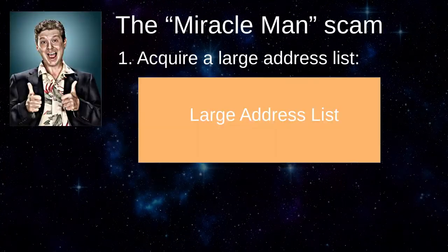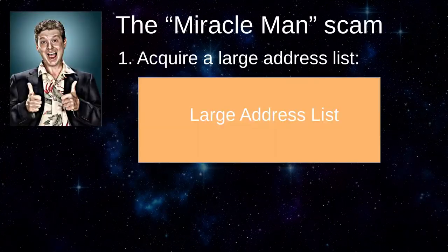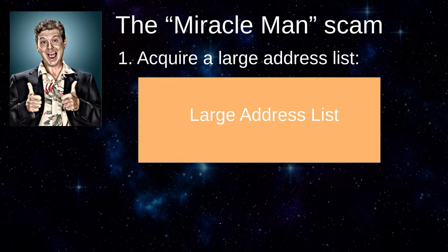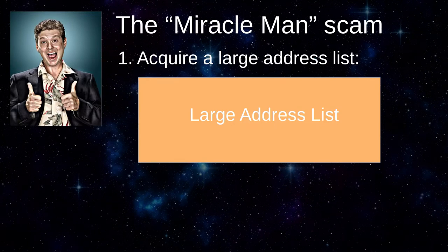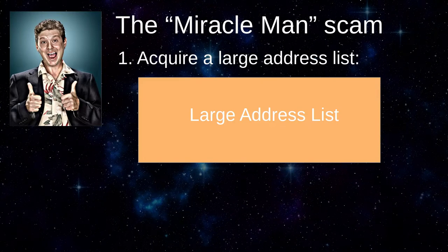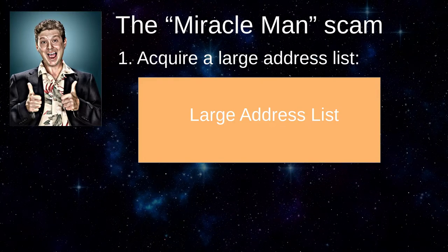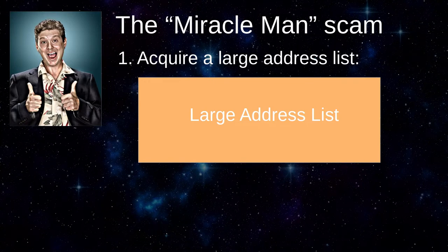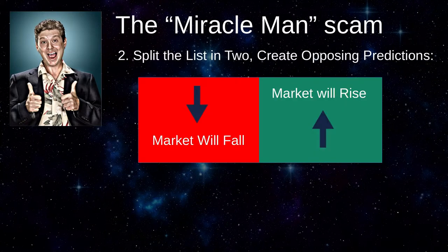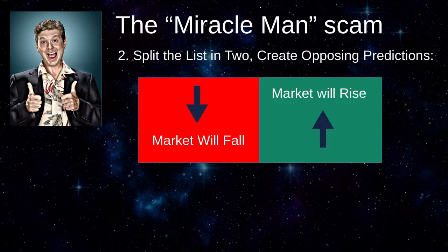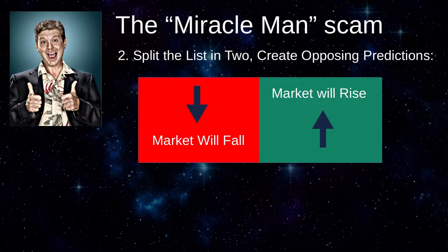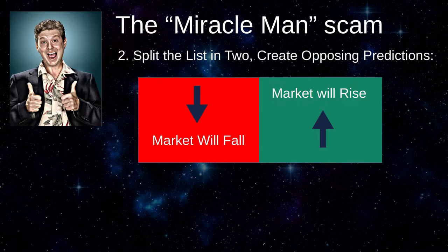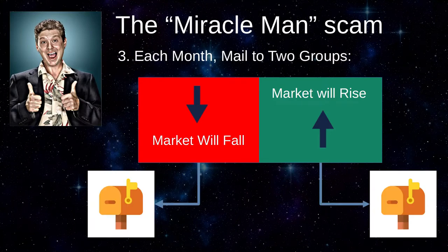Now for the reveal — here's how Miracleman works. First, Miracleman gets hold of a very large address list, easily acquired online. Ideally, the list length should be a power of two for a reason that will become obvious. Next, Miracleman divides the list in two and gives each group of recipients an opposite prediction: the market will rise, or the market will fall. He sends the emails.